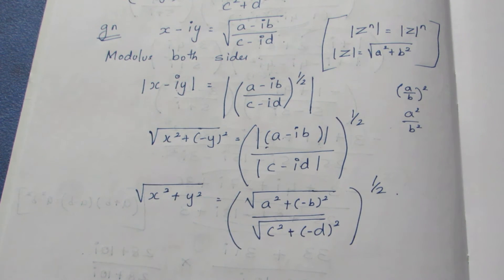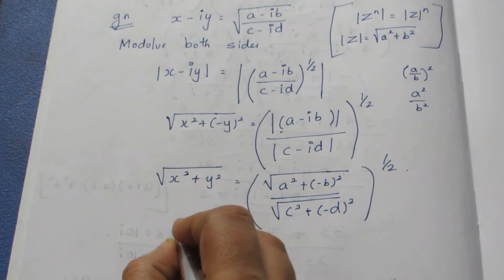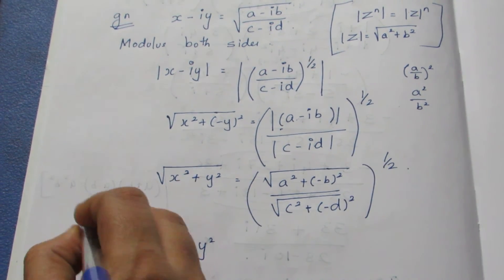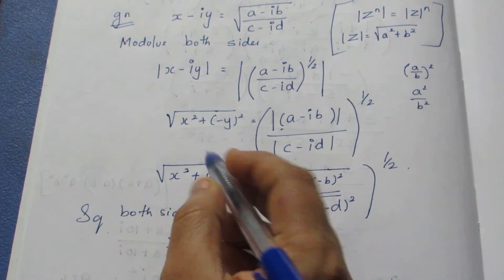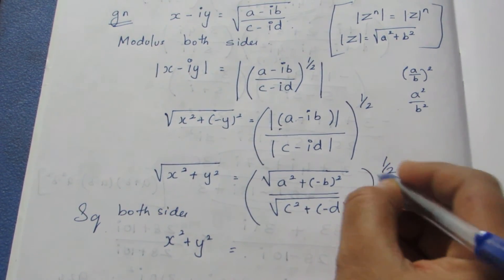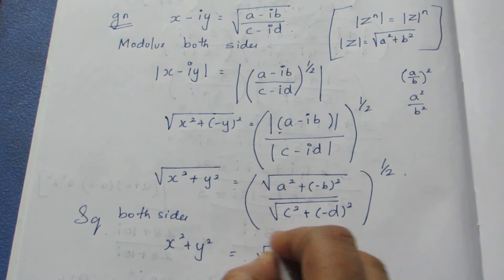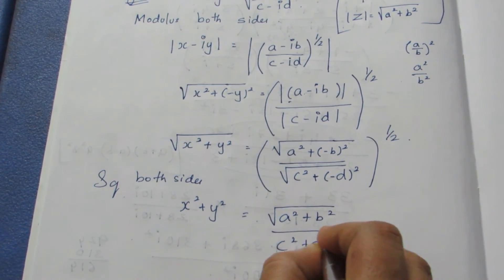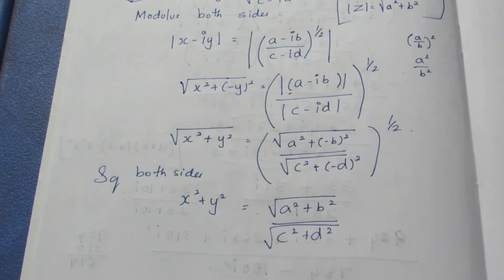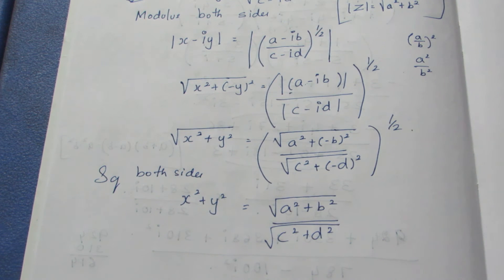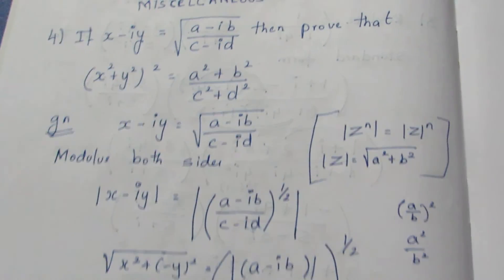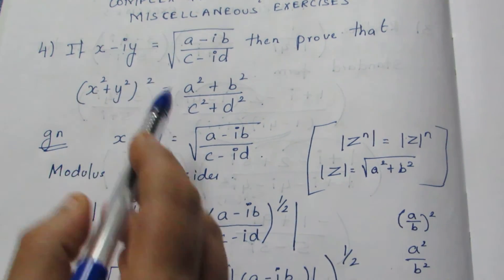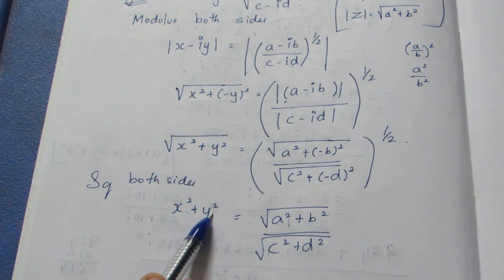Now squaring both sides. If I square both sides, the root cancels and it becomes x square plus y square. Here squaring both sides, square and root get cancelled. This is also a root, so root gets cancelled, and it becomes root of (a square plus b square) by (c square plus d square). But what we need to prove has x square plus y square the whole square, and what we got is just x square plus y square.